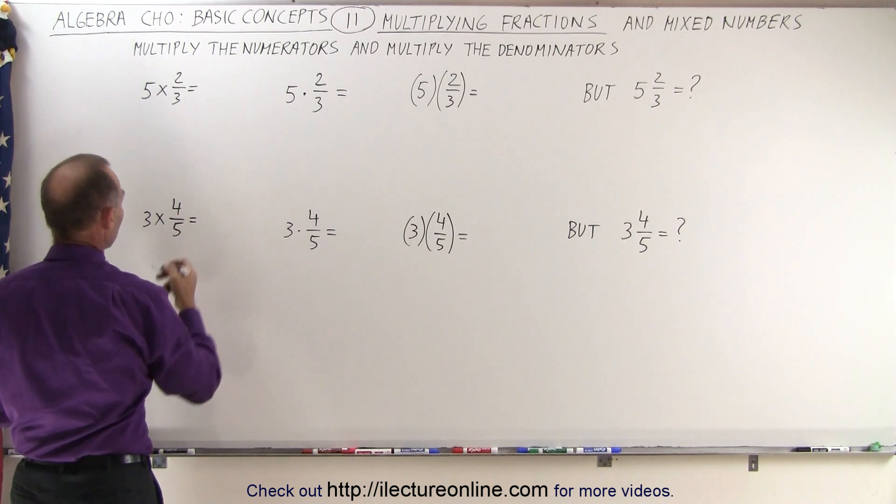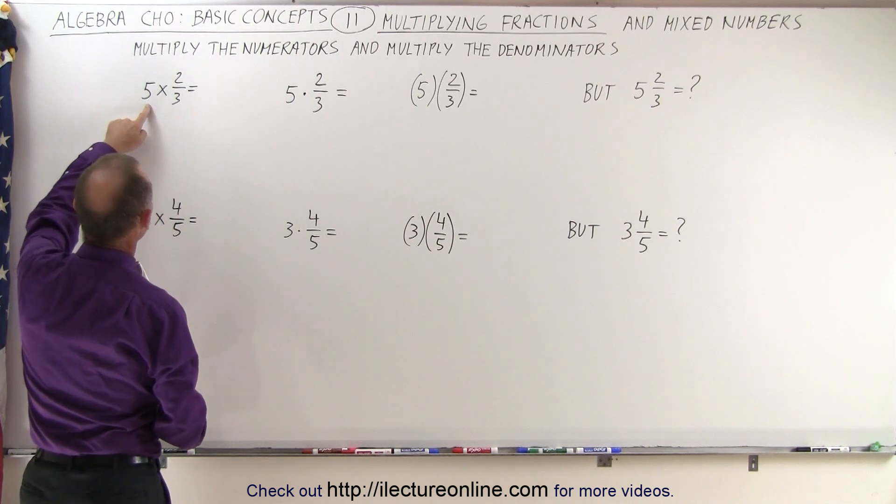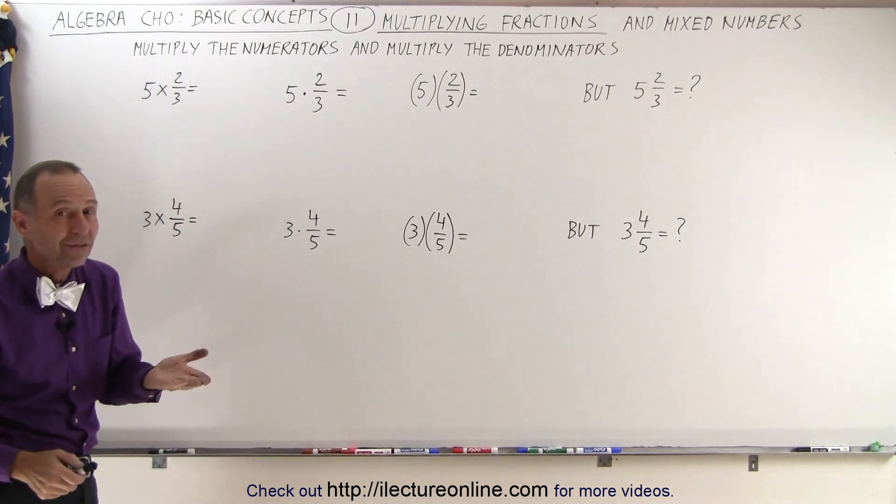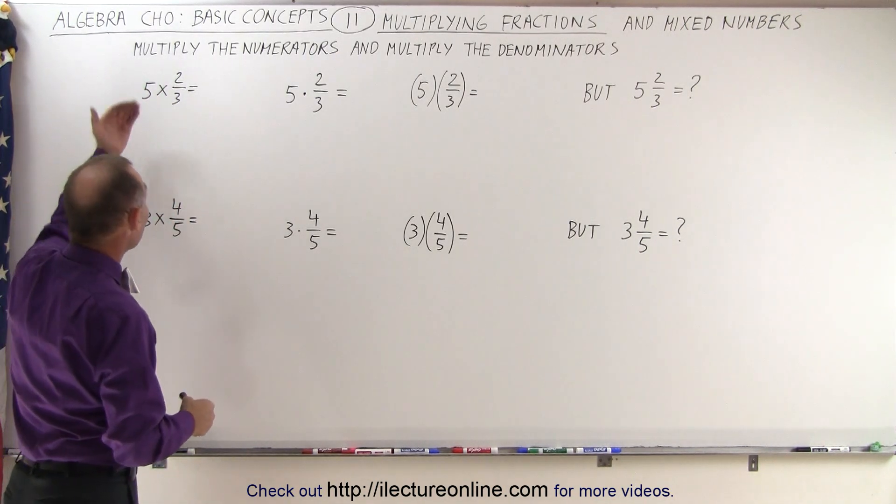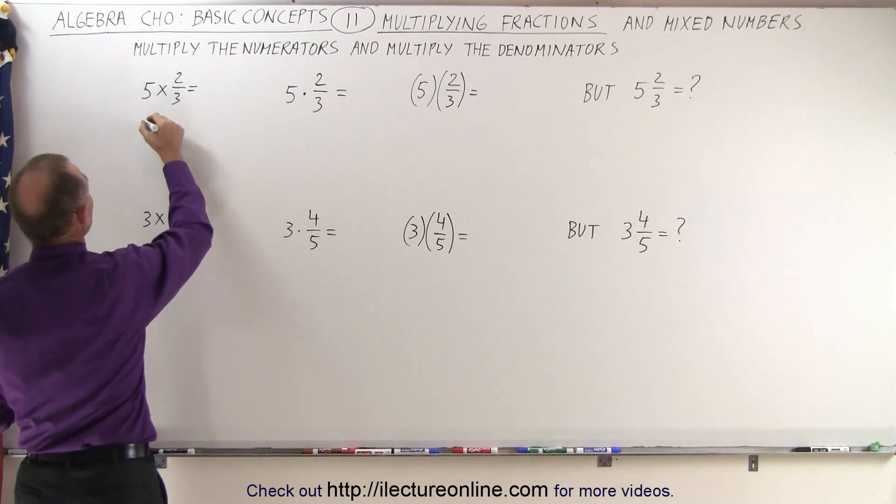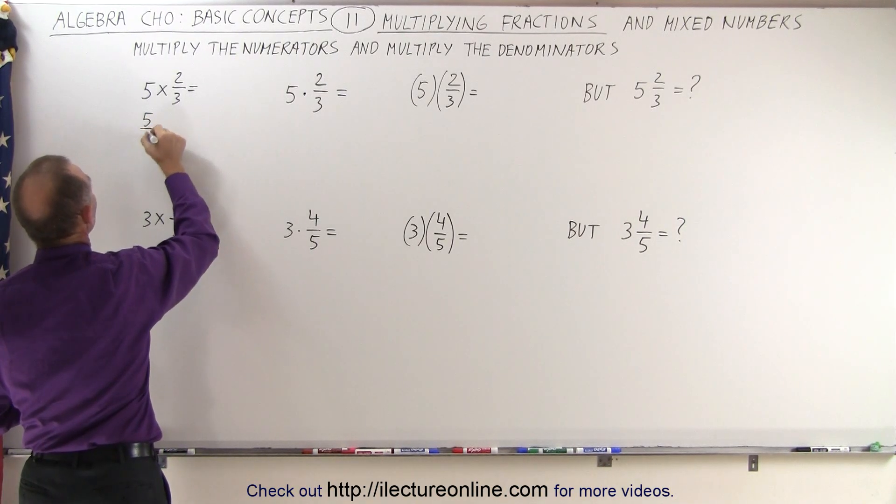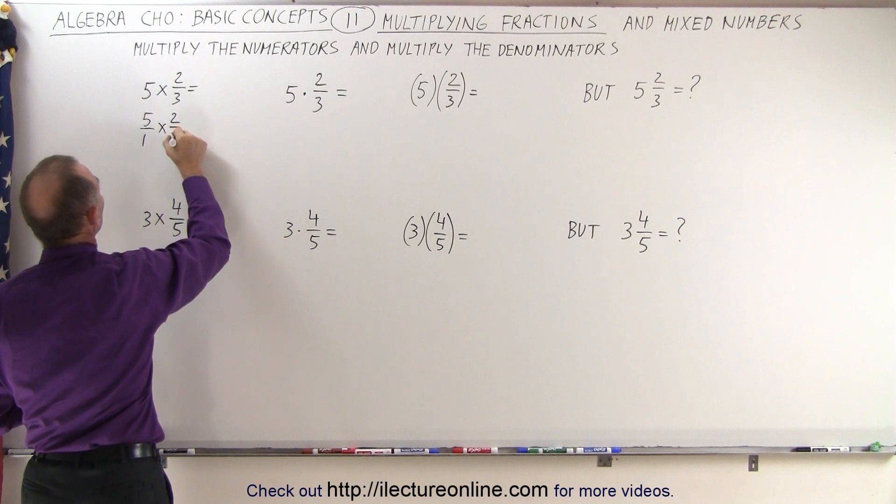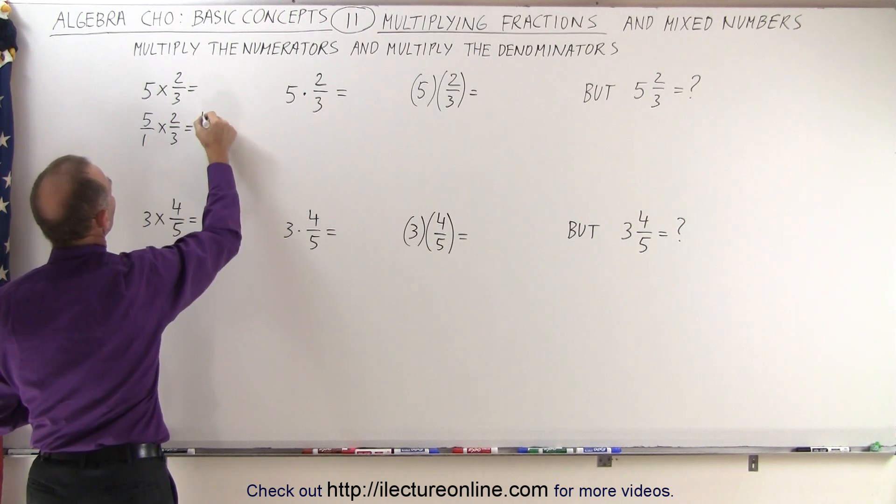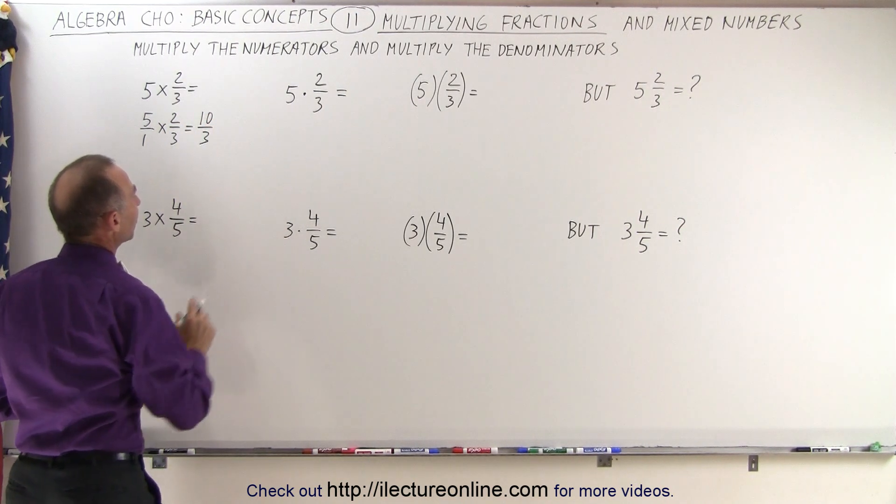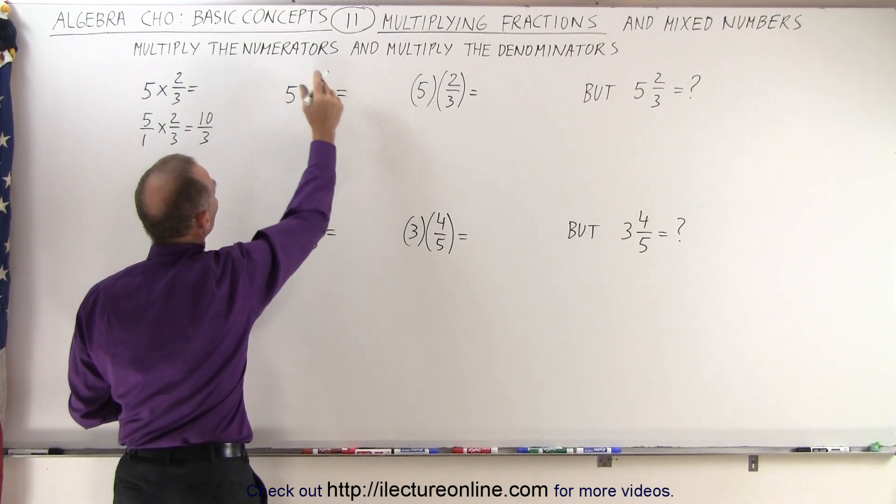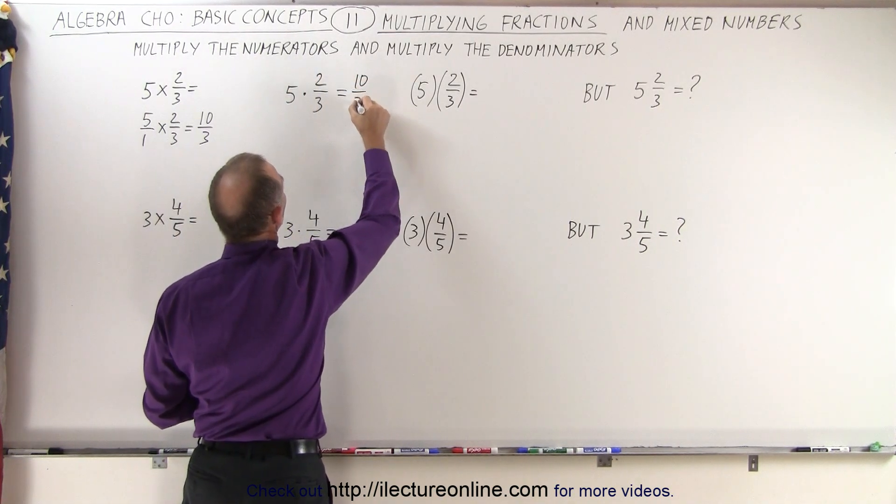And so here what we end up doing is we end up multiplying the number times the numerator, because when we see the number 5 there, essentially that means 5 over 1. So we could say that's the same as 5 over 1 multiplied times 2 over 3, which is equal to 10 over 3. Same over here. We multiply the numerator, so 5 times 2 which is 10 divided by 3.